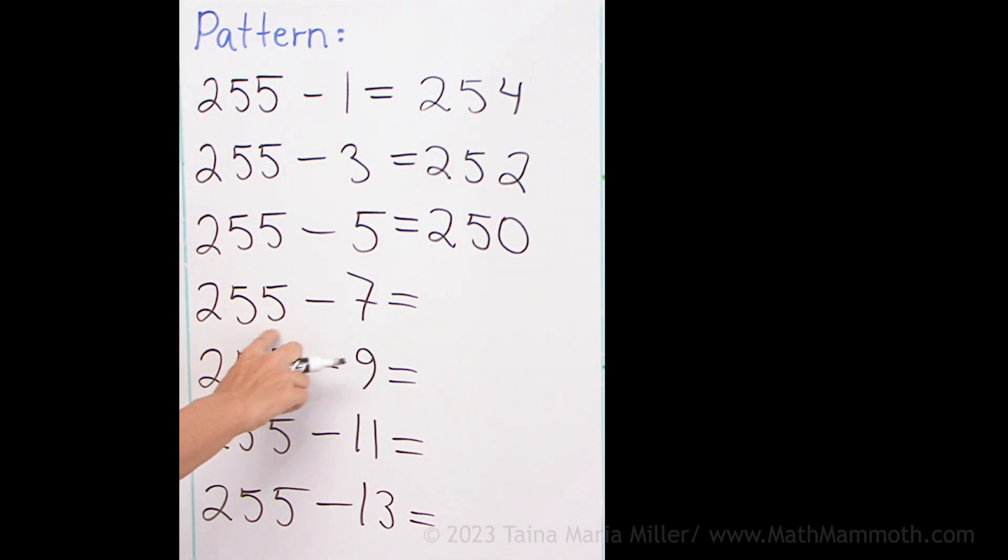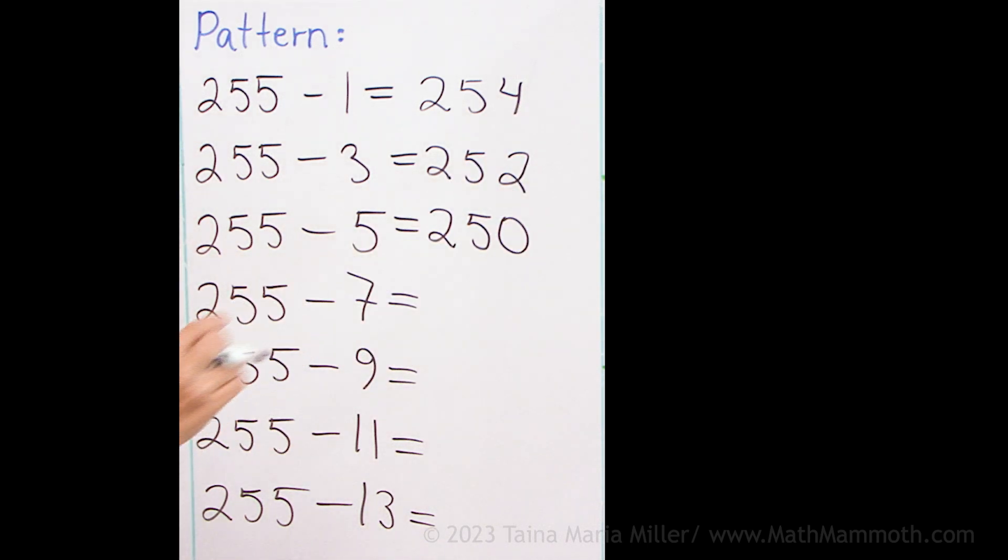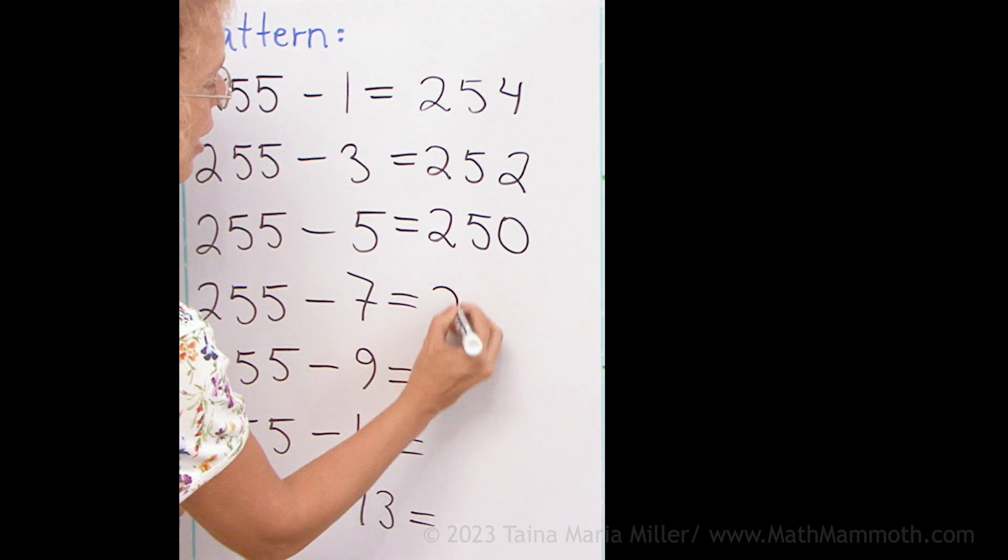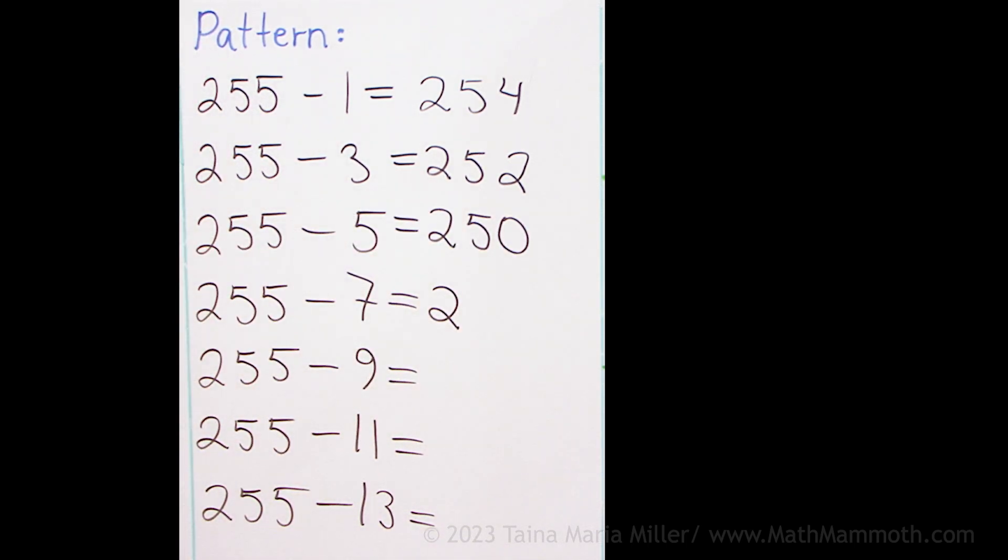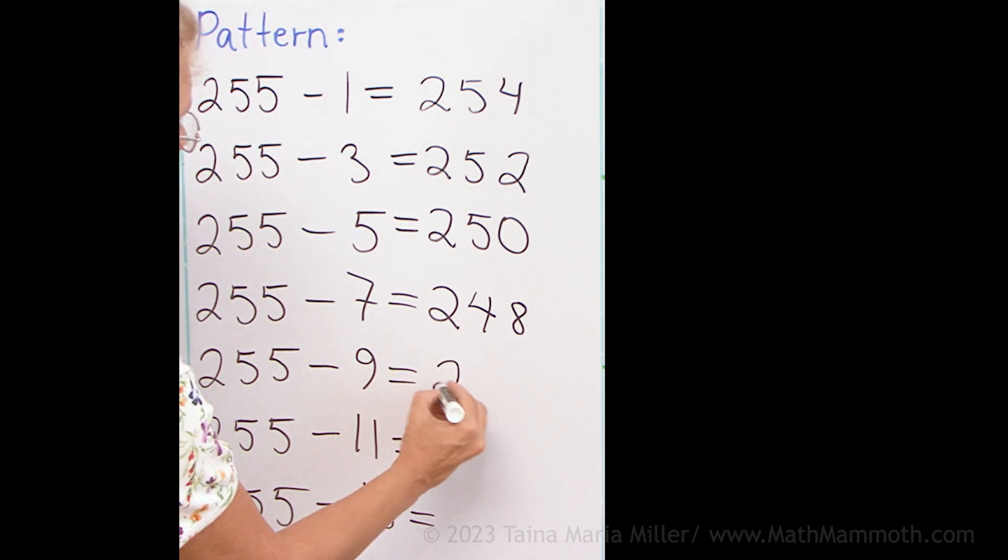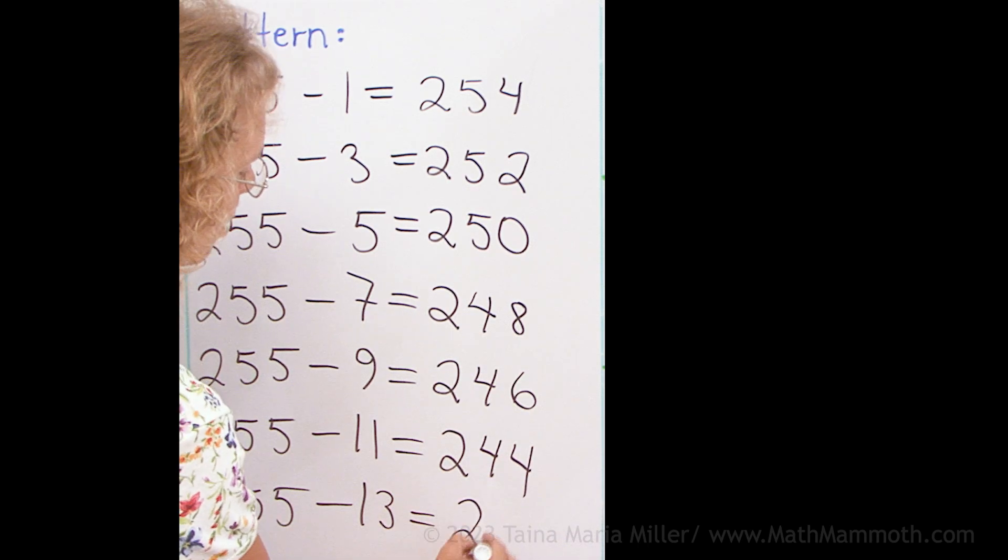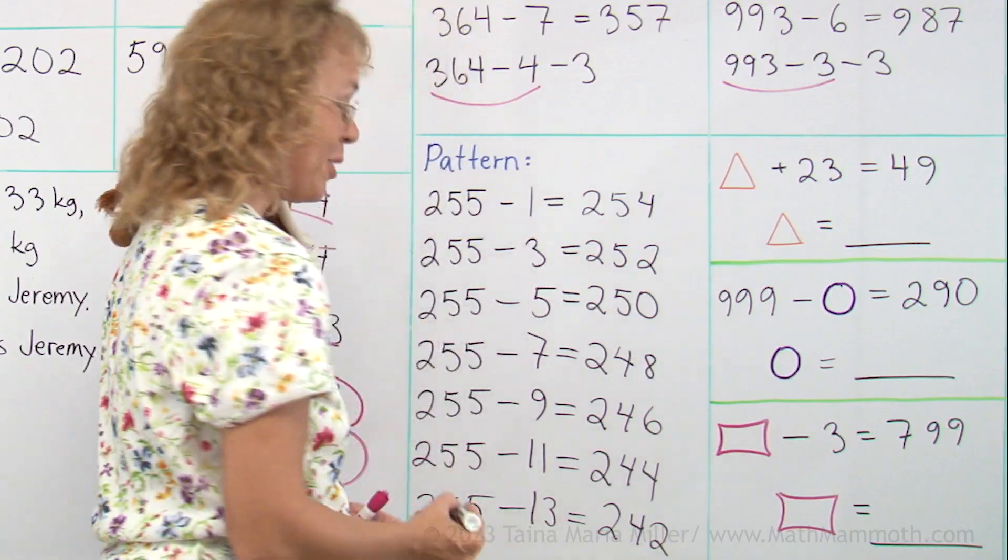And so here, 255 minus 7. But you see over here is a pattern too. And it works the same way by 2's, 2 less each time. So I can use that. It will be actually quicker to fill in that way. 2 less than 250, 248. Then 246, 244, and 242. Well done.